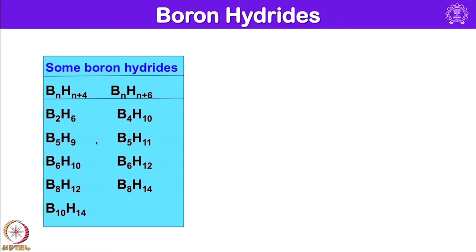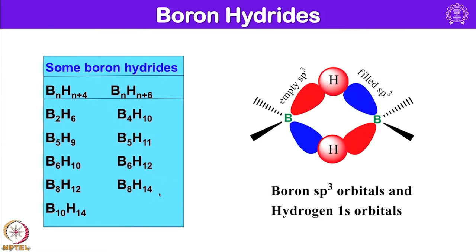Some boron hydrides listed under BnHn+4 include: B2H6, B5H9, B6H10, B8H12, and B10H14. Under the BnHn+6 series there are: B4H10, B5H11, B6H12, and B8H14. All of them invariably have some terminal BH bonds and some bridging BHB bonds. In BHB one can expect 3-center 2-electron bonds, typical of diborane.